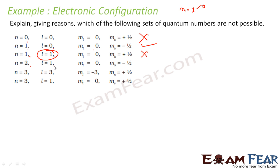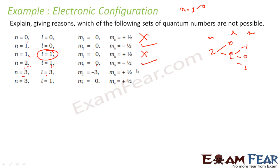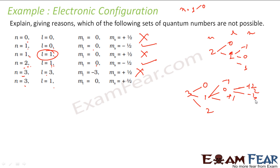For n=2, L=1, ML=0 — this is possible. For n=2, L can have values 0 to 1, so L=1 is valid. For L=1, ML can be −1, 0, or +1, so ML=0 is valid. For n=3, L=1, ML=0 — this is also possible. L=1 is valid for n=3, and ML=0 is within the range for L=1.